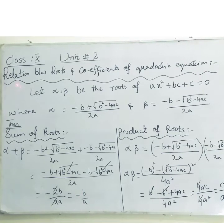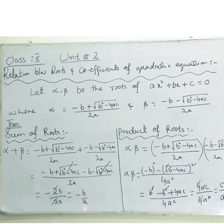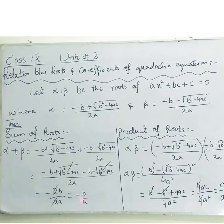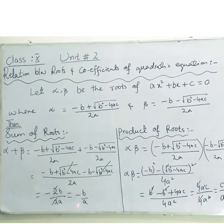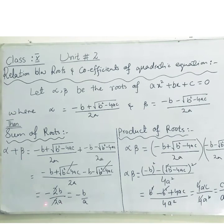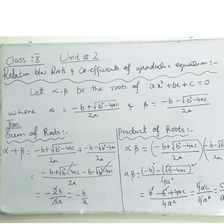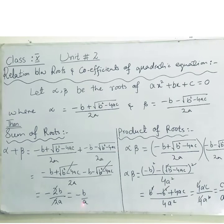So we get the first relation between roots and coefficients of a quadratic equation. Here alpha and beta are the roots, and a and b are the coefficients. The sum of roots equals -b/a, where b is the coefficient of x and a is the coefficient of x².